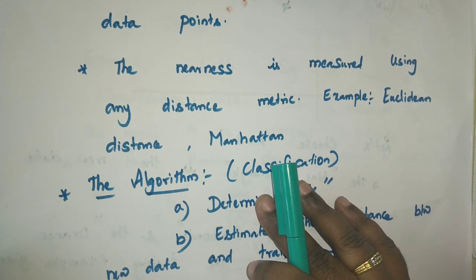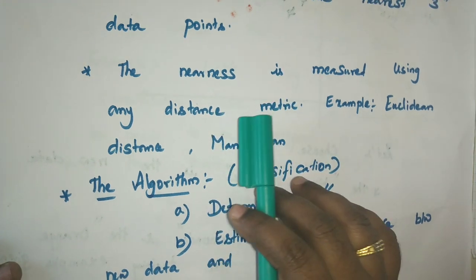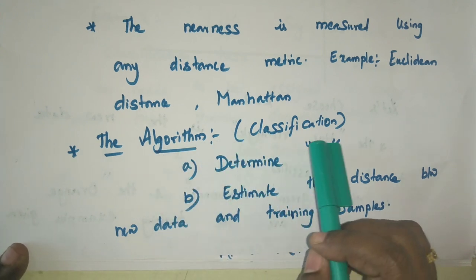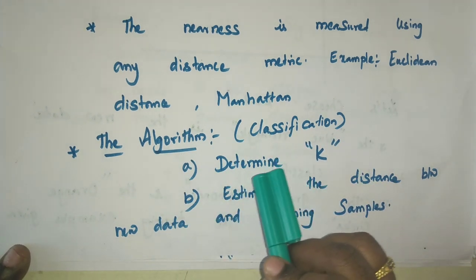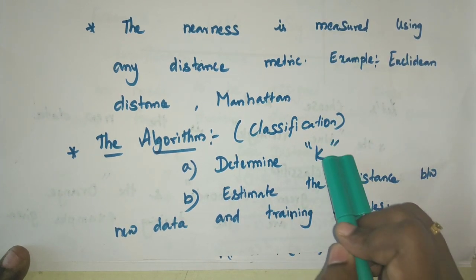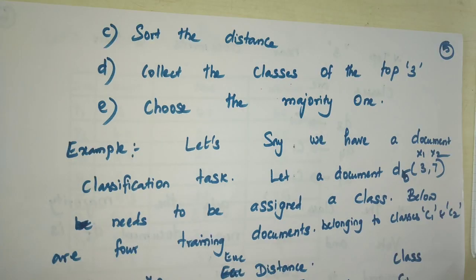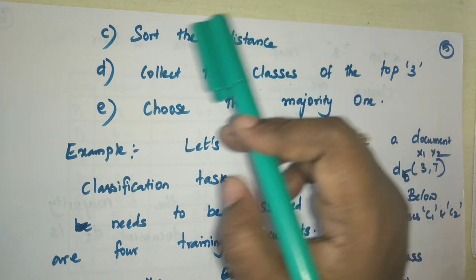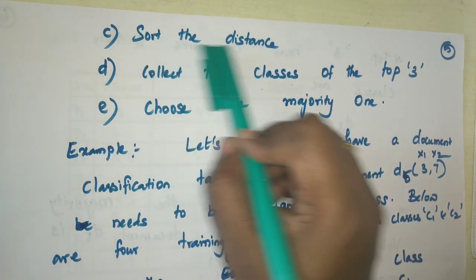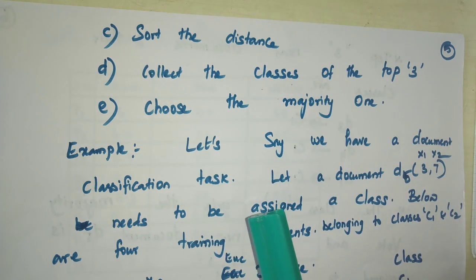First, we find the distance metric — the distance between the blue rectangle and the green diamonds and the orange circles. We can use any distance metric, either Euclidean distance or Manhattan metric. To summarize, the algorithm for classification using KNN is: fix the value of K, find the distance between the new data point and all training samples, sort the distances, collect the classes of the top K neighbors, and choose the majority class.